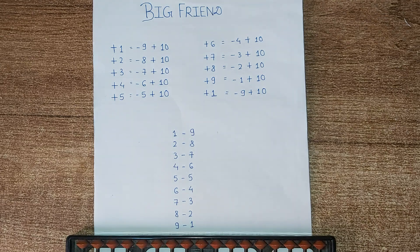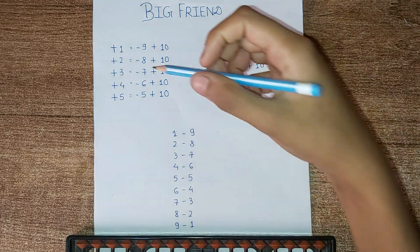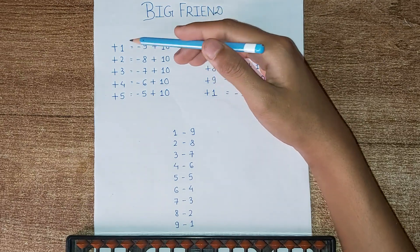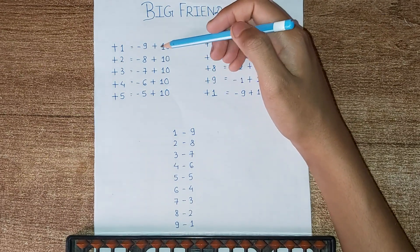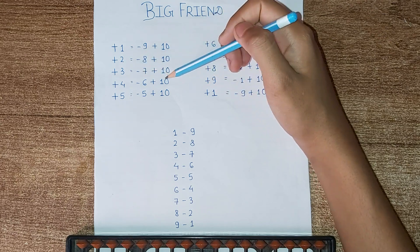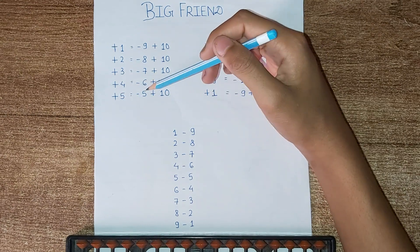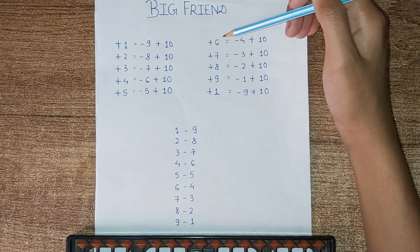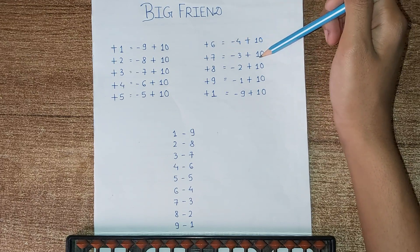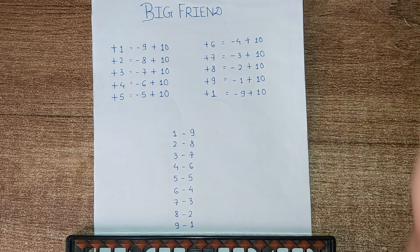So when we have to add 3 and enough beads are not available, then we use this formula that is minus 7 plus 10 to get the answer. Similarly, 1 equals minus 9 plus 10, 2 equals minus 8 plus 10, 3 equals minus 7 plus 10, 4 equals minus 6 plus 10, 5 equals minus 5 plus 10, 6 equals minus 4 plus 10, 7 equals minus 3 plus 10, 8 equals minus 2 plus 10, 9 equals minus 1 plus 10.